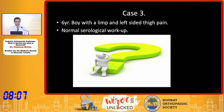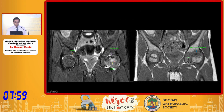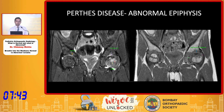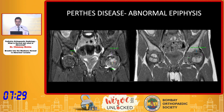Coming to the third case: a six-year-old boy with a limp and left-sided thigh pain with a normal serological workup. On the pelvis with both hips — fat-suppressed and T1 images — the normal physis on the right side is homogeneous with no edema. On the left side there is a discrete double-line sign, fragmentation, loss of fatty marrow, and collapse. This is consistent with Perthes disease. The abnormal epiphysis shows marrow edema, loss of fatty marrow, fragmentation, and collapse.